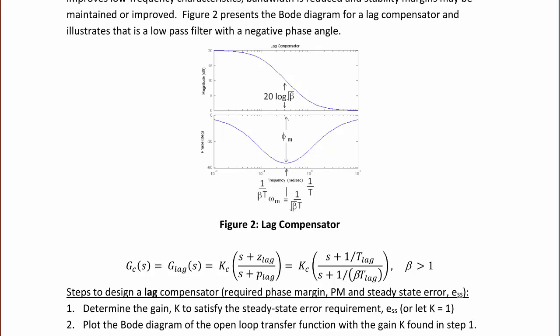Notice that omega sub m, which is the minimum of the phase angle, is the geometric mean of the two corner frequencies: 1 over beta*T and 1 over T, which also represent z-lag and p-lag. The lag compensator is represented by the transfer function GC(s) equal to KC times (s + z-lag) over (s + p-lag), or KC times (s + 1/T-lag) divided by (s + 1/(beta*T-lag)), where beta is greater than 1.